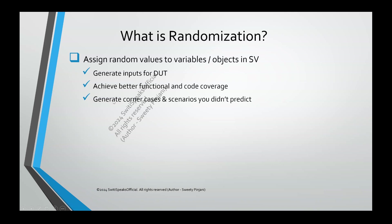The next benefit is that in design, sometimes there are corner cases — conditions which we have not thought of but which can exist. For example, I might not have thought that some condition will cause my system to hang. When the design is very complex, it is not possible to know that a particular scenario can result in a system hang. But due to randomization, since you have randomized the variables, it will automatically generate these corner cases and scenarios which we can't predict — where bugs can occur. This randomization is going to generate such scenarios and help us find bugs in the design.